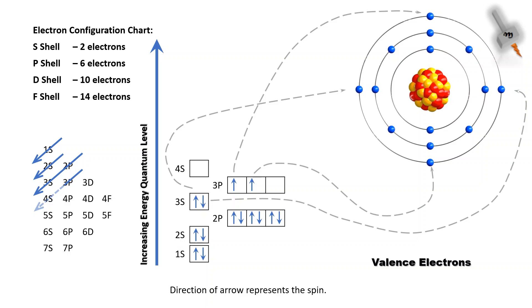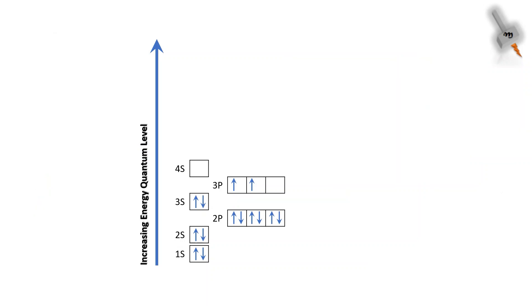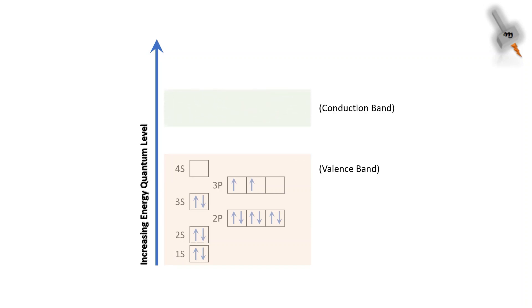Now let's move on. The orbital electrons are called the valency band electrons, and when these electrons jump to the conduction band, the current starts flowing.